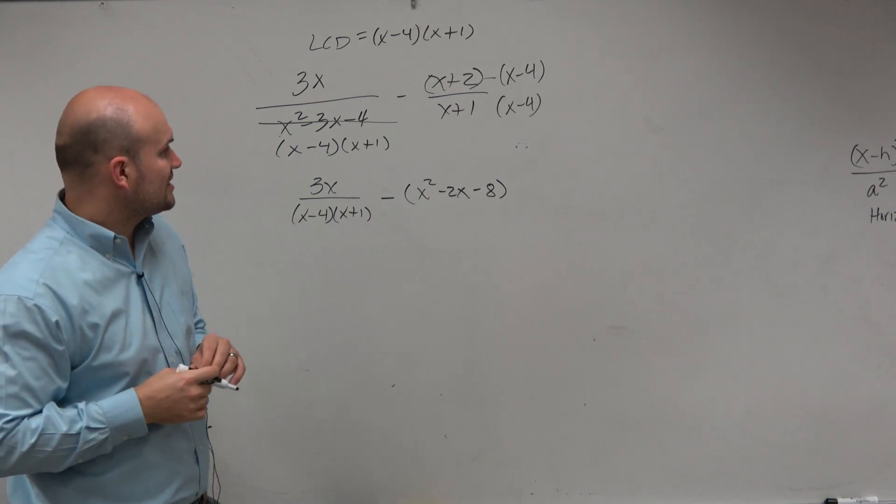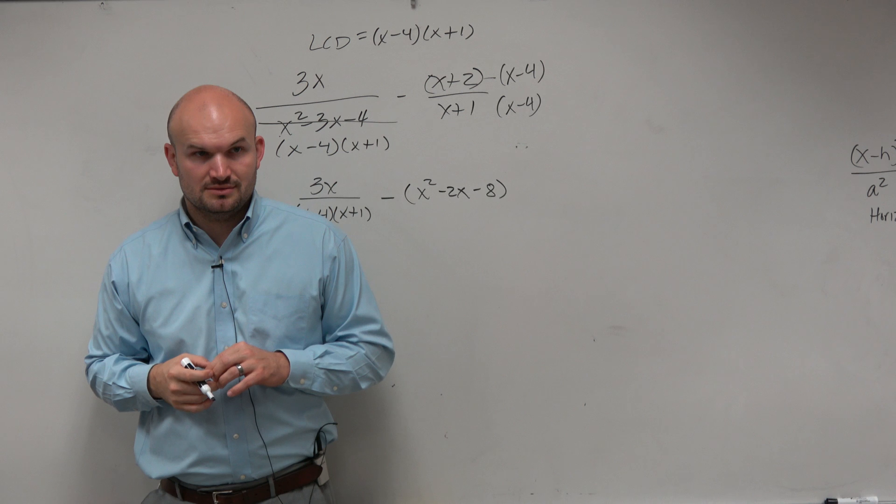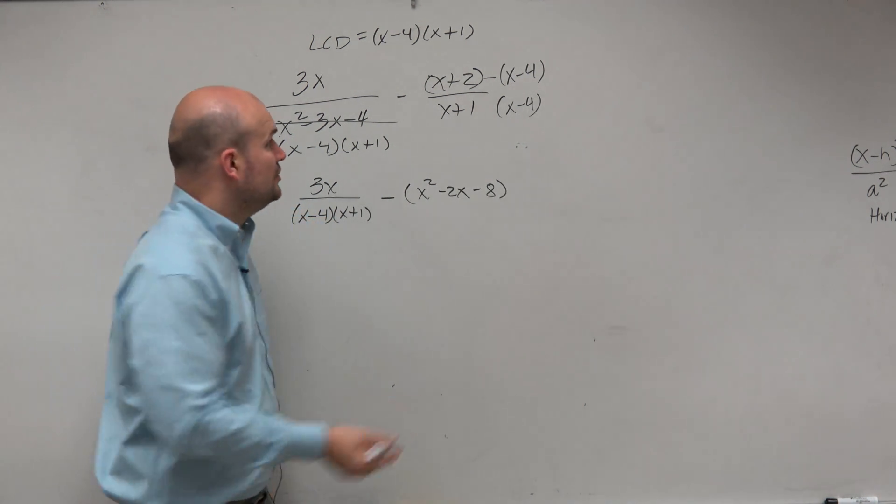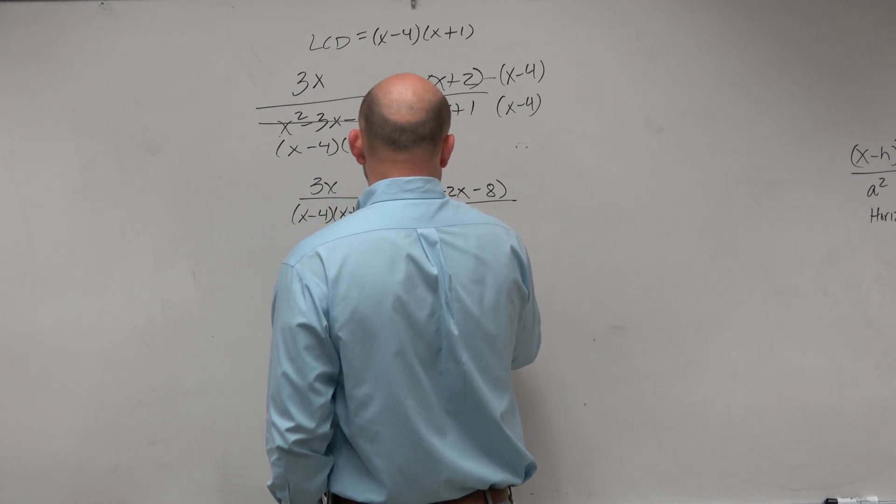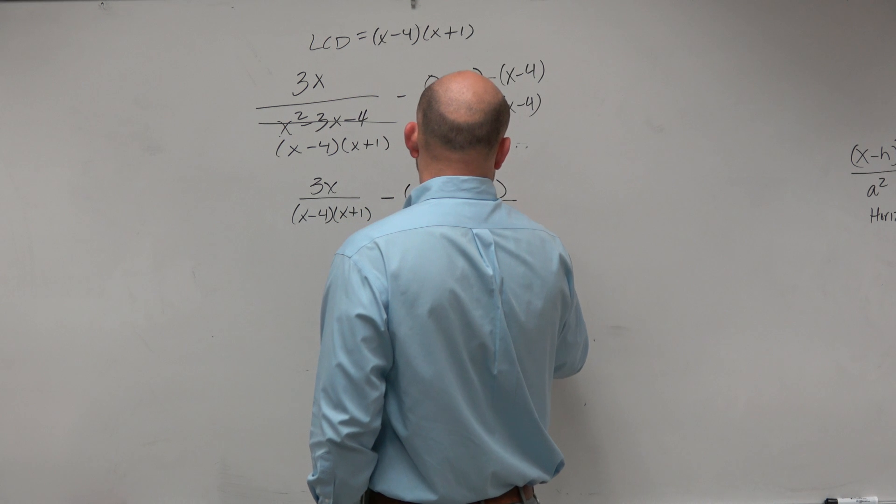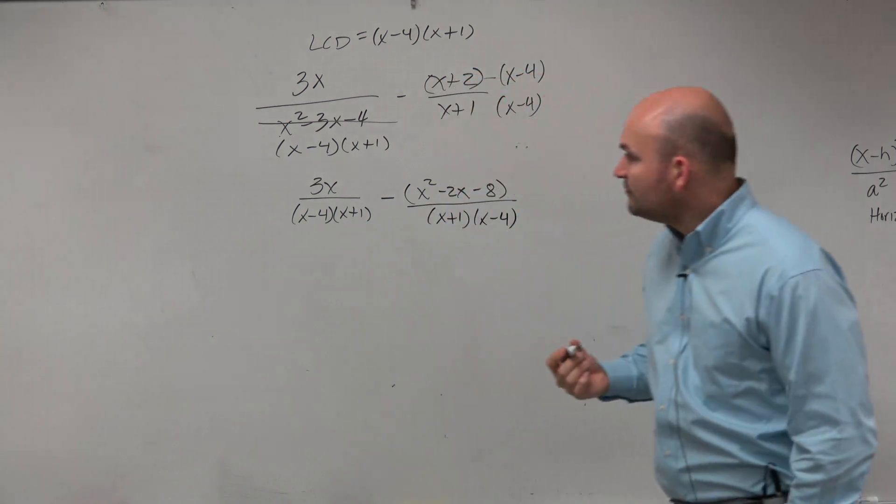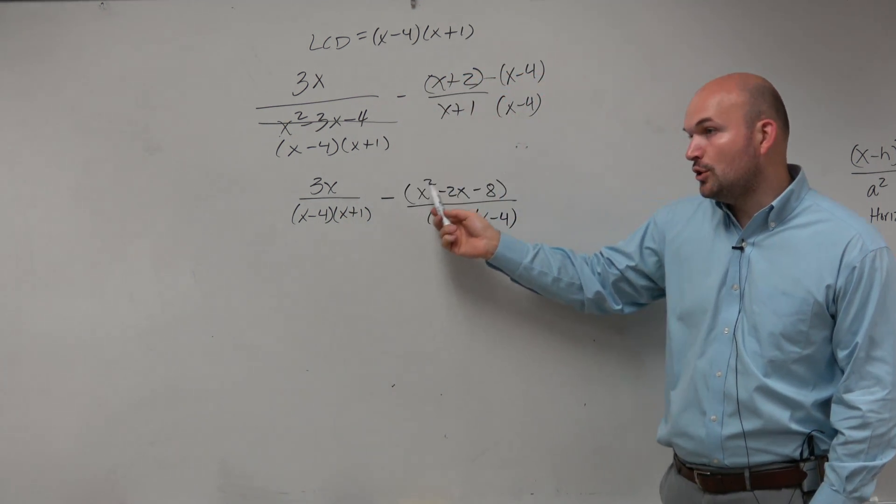Right? Negative 4x plus 2x. Anybody confirmed that answer? You could also distribute that negative first if you wanted to. But it's important for you guys to realize that you're subtracting this whole quantity.